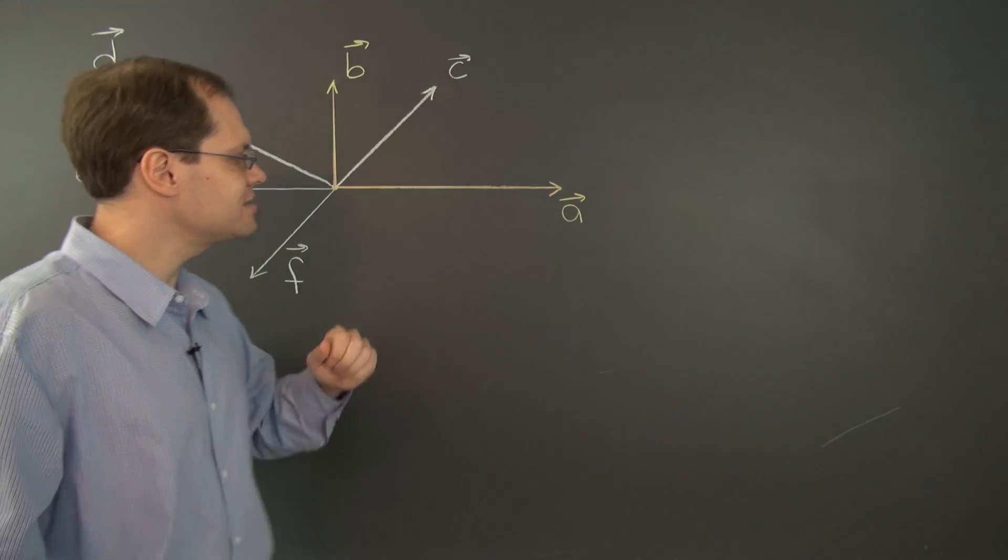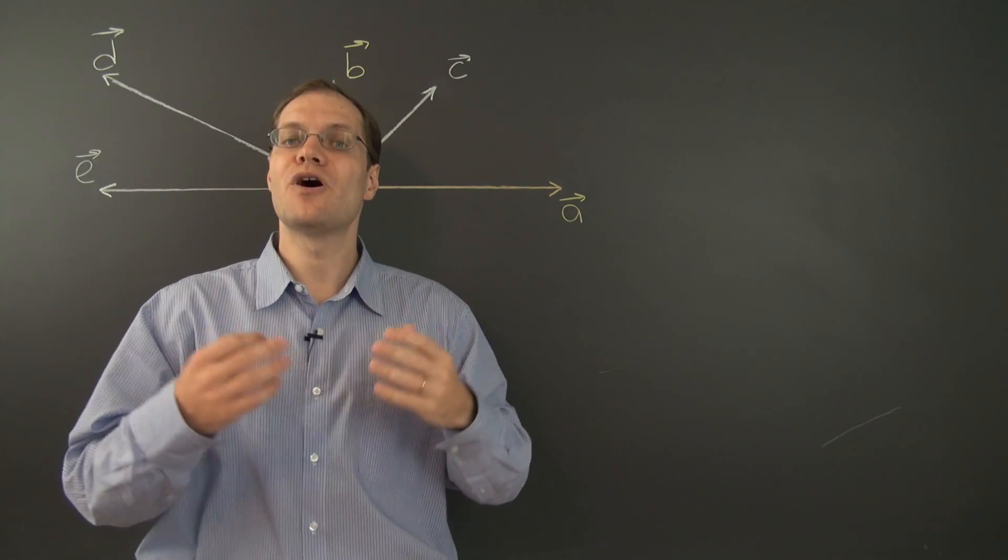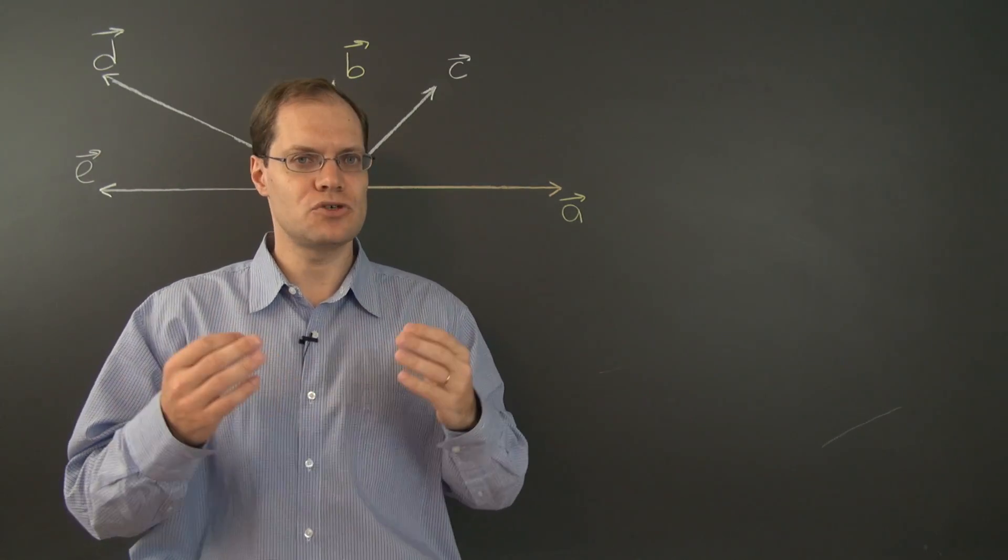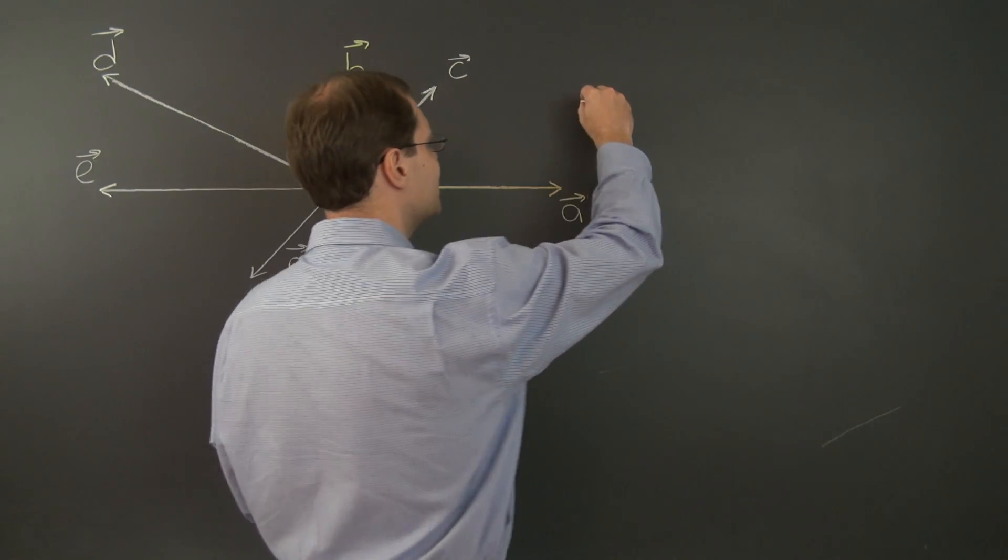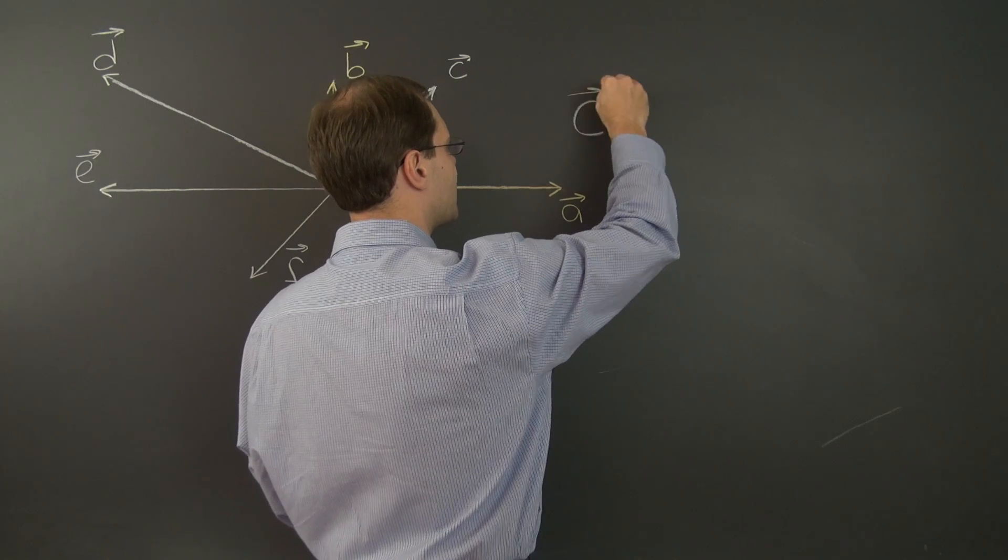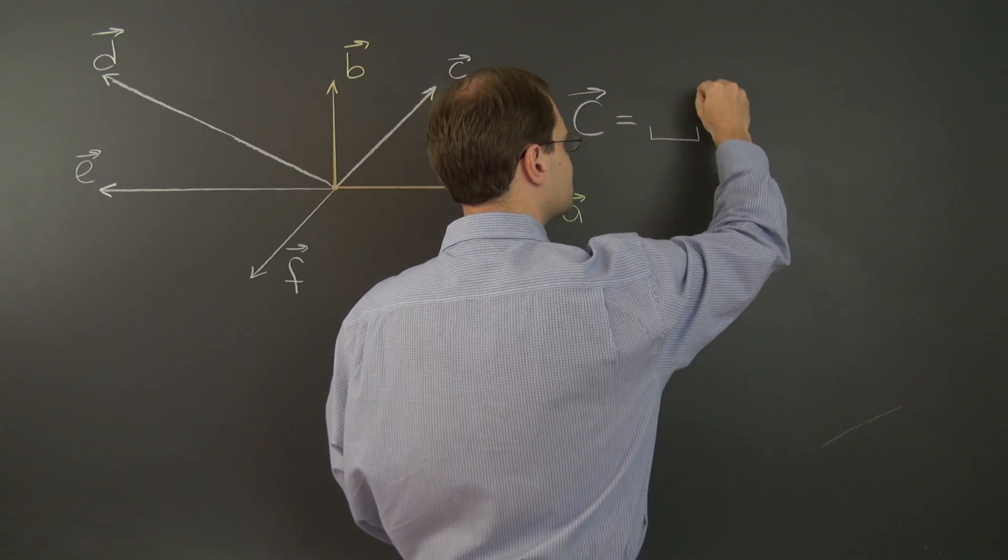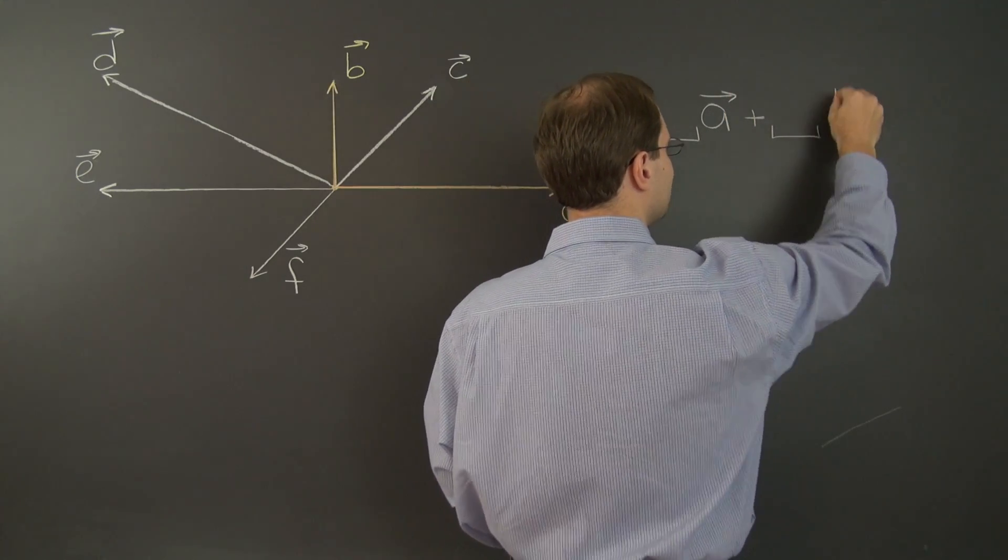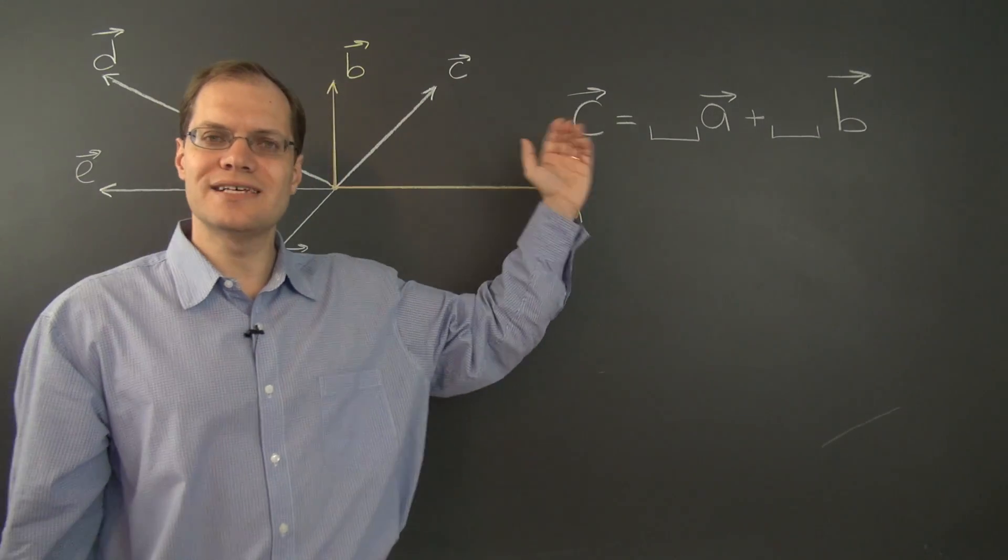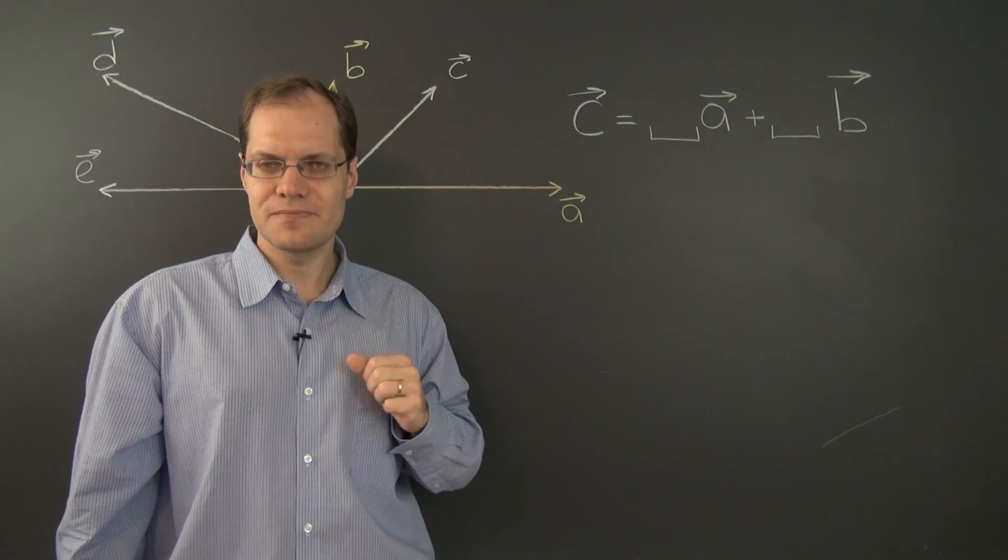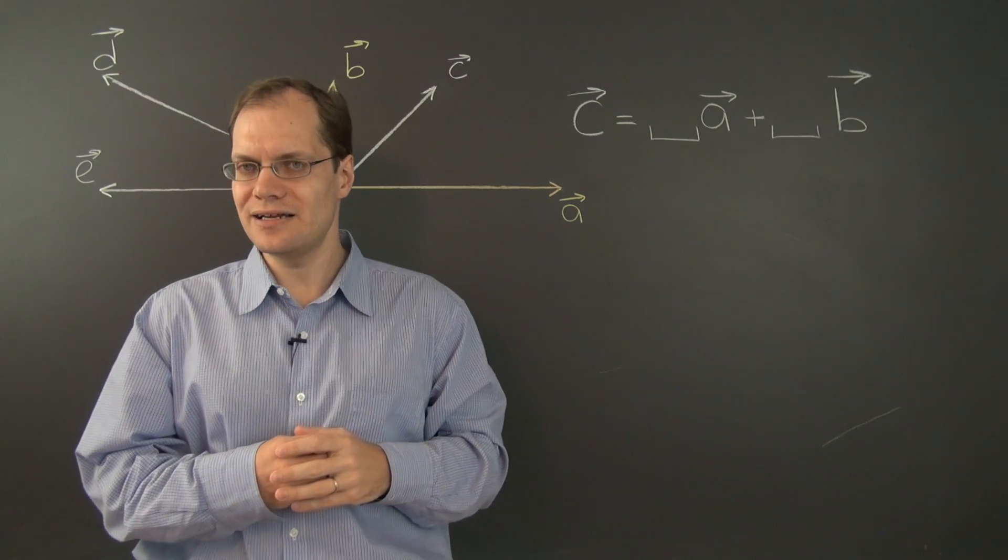Now as it stands, the problem of decomposition is determining the coefficients of the linear combination. So schematically, it can be written like this. Yes, we're given the vector C, and we have to determine the unknown coefficients of the linear combination of A and B that will yield C.